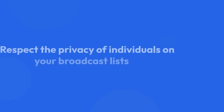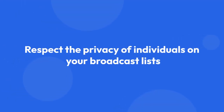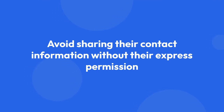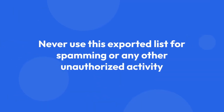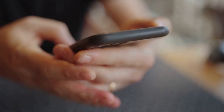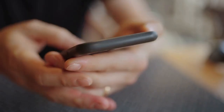Remember, any method involving copying phone numbers from WhatsApp should always prioritize privacy and comply with relevant data protection regulations and the terms of service of WhatsApp. Always respect the privacy of individuals on your broadcast lists. Avoid sharing their contact information without their express permission, and never use this exported list for spamming or any other unauthorized activity. The best practice is to manage your broadcast list directly within WhatsApp unless you have a legitimate and privacy-compliant reason to export it. Always be mindful of data security and privacy regulations when dealing with contact information.